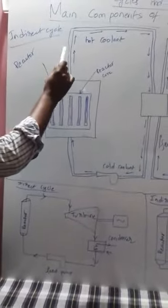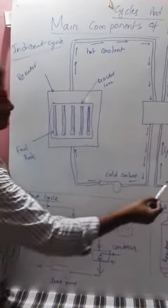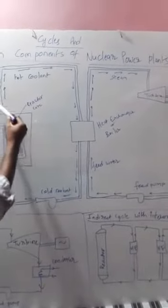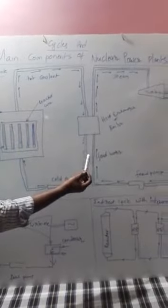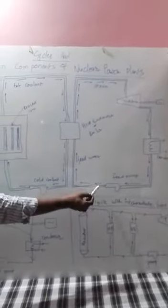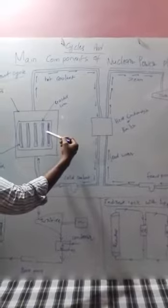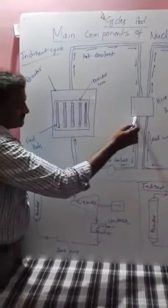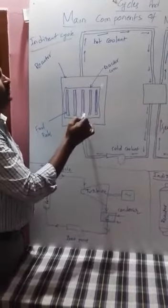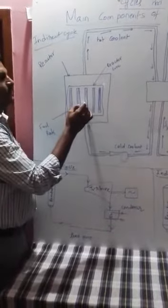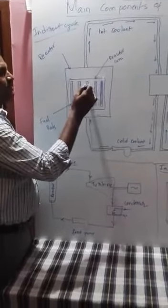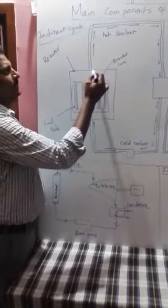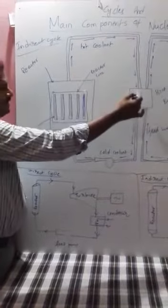In the indirect cycle, the working fluid circulating through the Rankine cycle indirectly absorbs heat from the working fluid circulating through the nuclear reactor — that is why it is called an indirect cycle. Here, the working fluid, water, does not directly contact the nuclear reactor. Instead, there is a coolant which circulates through the nuclear reactor, heat exchanger, and pump. The cold coolant enters the reactor core where nuclear fission takes place, and as fission occurs, a large amount of heat is released, which is absorbed by the cold coolant, making it hot.